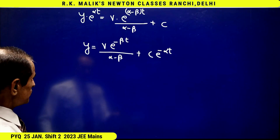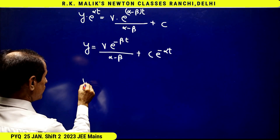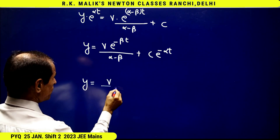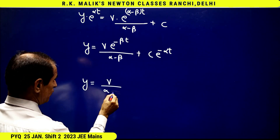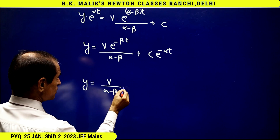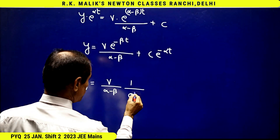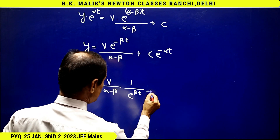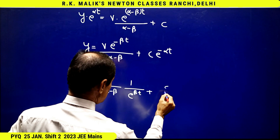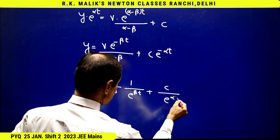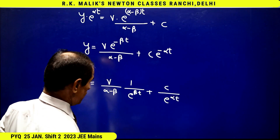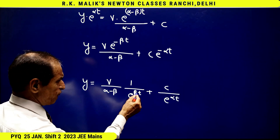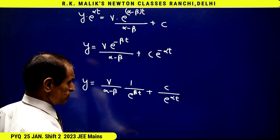That is, y equals gamma upon (alpha minus beta) into one upon e to the power beta t, plus c upon e to the power alpha t. Because alpha and beta are both positive, we now take the limit as t tends to infinity.